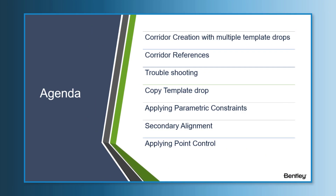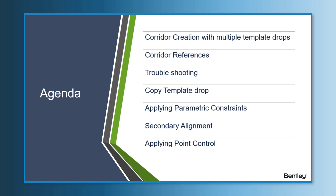Before we do that, here's a quick overview of the agenda. I'll start by demonstrating how to create a corridor and add multiple template drops. We will add corridor references and see how those references affect the modeling. There are some templates in these corridors that will have triggers to activate certain display rules when applying the corridor references. Sprinkled throughout the presentation, there will be various troubleshooting scenarios, and I will show you what we usually look for in technical support and how to troubleshoot and resolve those problems.